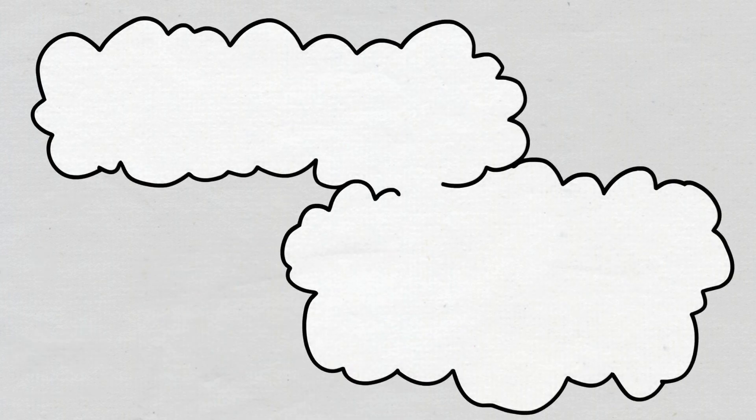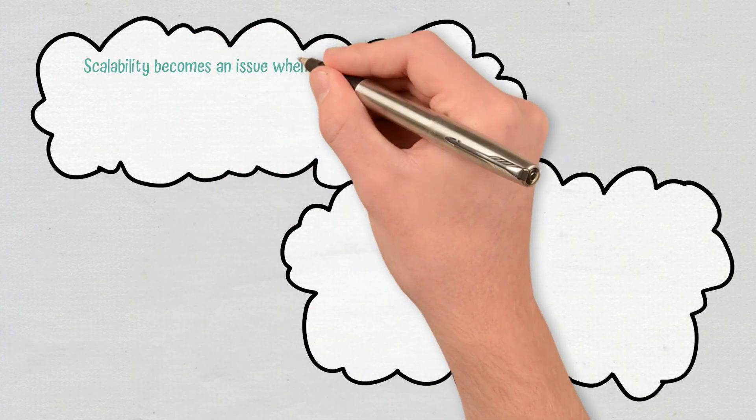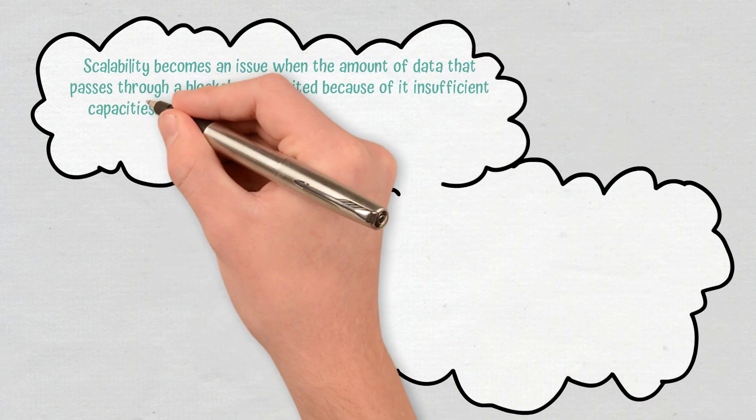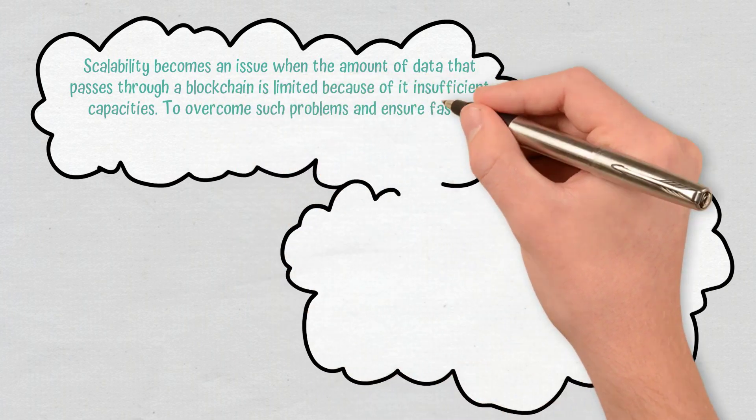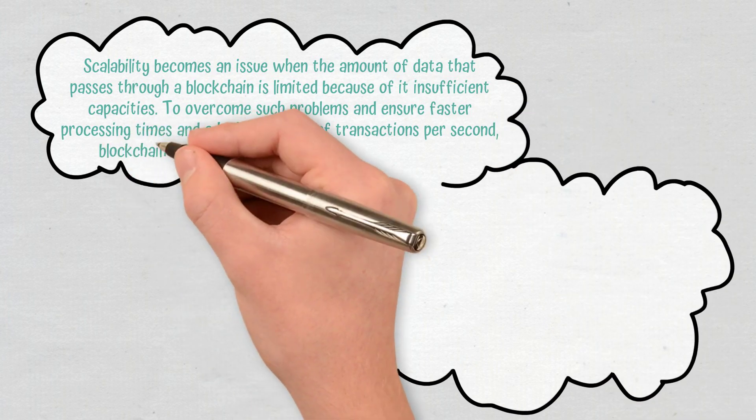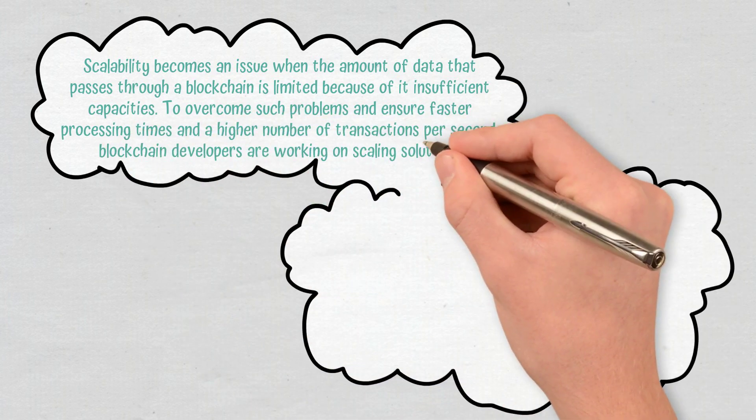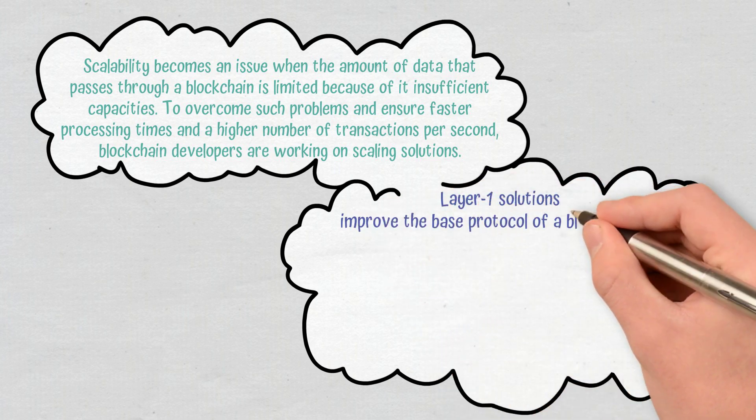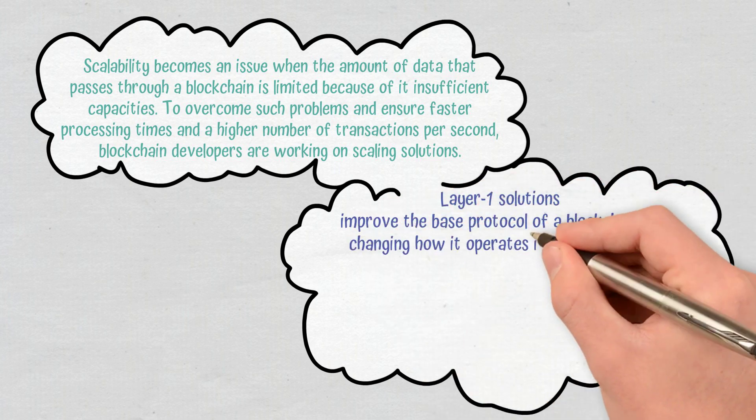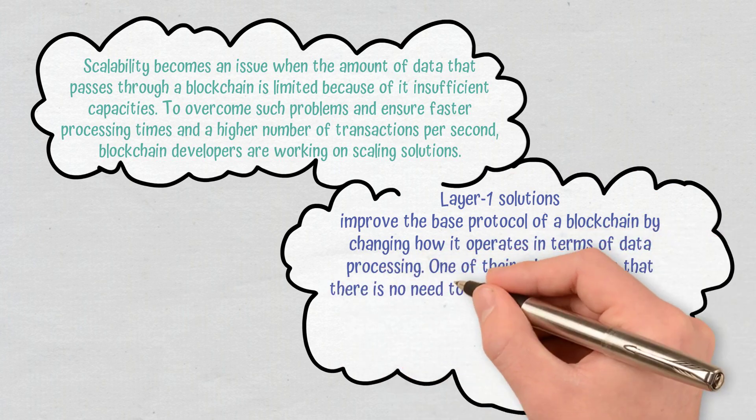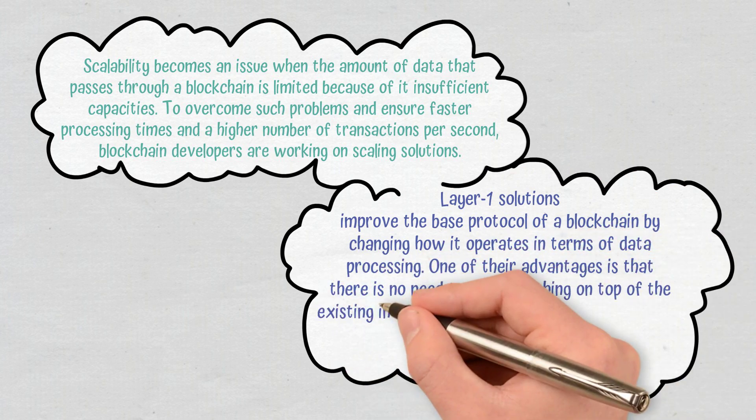Conclusions. Scalability becomes an issue when the amount of data that passes through a blockchain is limited because of its insufficient capacities. To overcome such problems and ensure faster processing times and higher number of transactions per second, blockchain developers are working on scaling solutions. Layer 1 solutions improve the base protocol of a blockchain by changing how it operates in terms of data processing. One of their advantages is that there is no need to add something on top of the existing infrastructure.